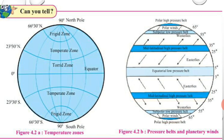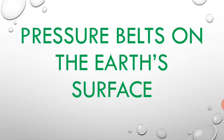Referring to figure 4.2b: between 5°N and 5°S we have the equatorial low pressure belt; between 25°–35° north and south we have the mid-latitudinal high pressure belt; between 55°–65° north and south we have the sub-polar low pressure belt; and between 80°–90° north and south we have the polar high pressure belt. There are thus various pressure belts formed on the surface of the earth.